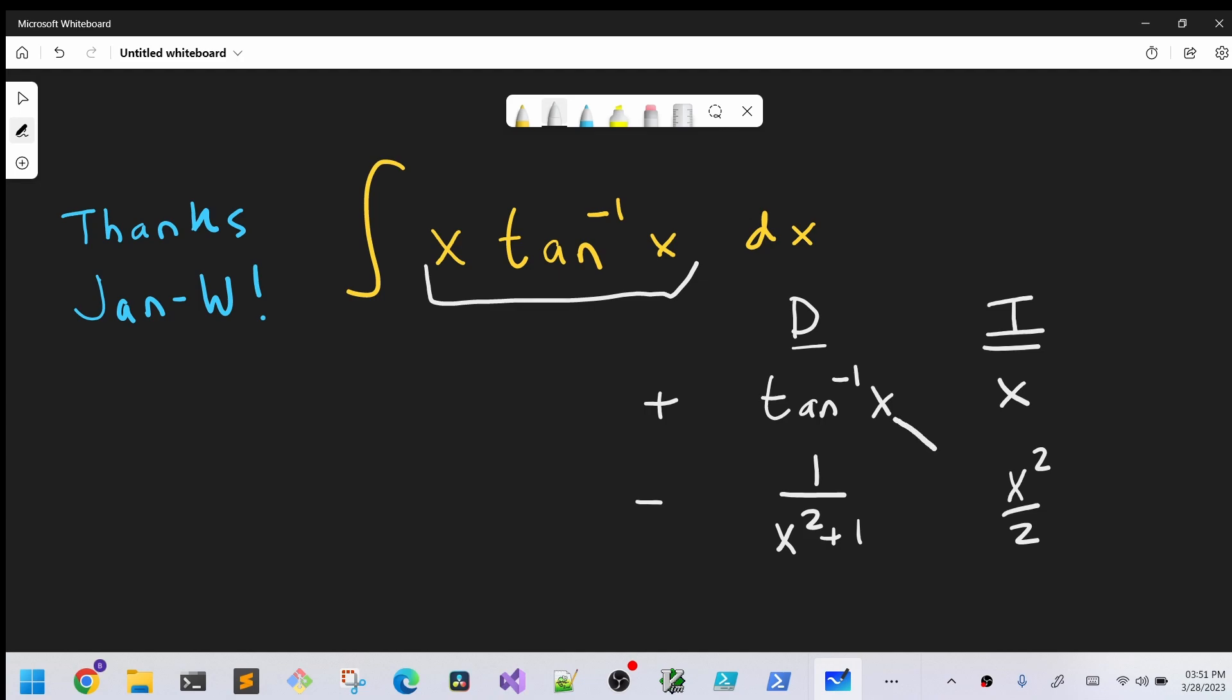Okay, so right away we have part of our answer right here on the diagonal. Let's just write that down so we can keep track of what's happening. So we got x squared over 2 arctan x, but then we get to deal with this piece.